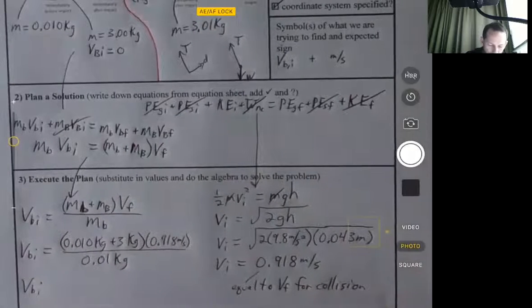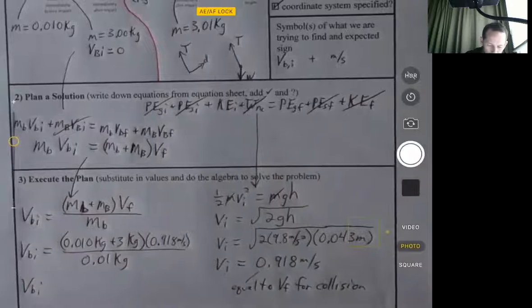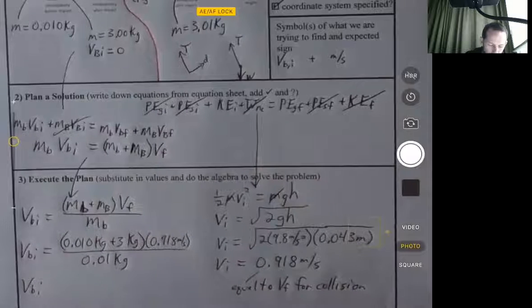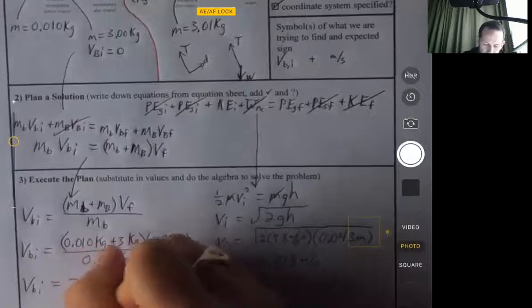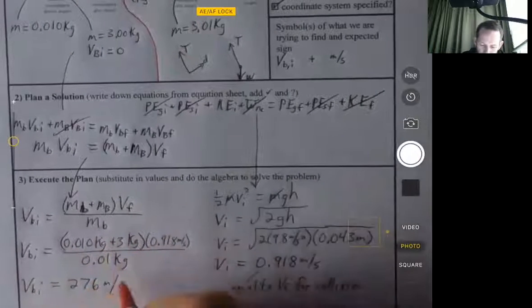And then we divide by the mass of the bullet. So we do this on our calculator and you can check me on this as well. We get 276 meters per second.